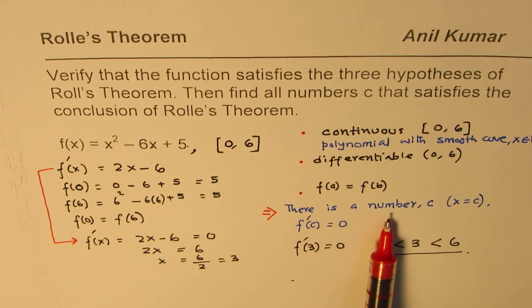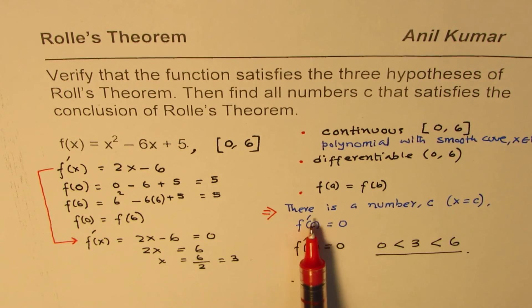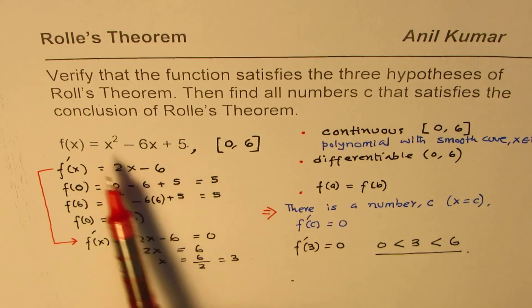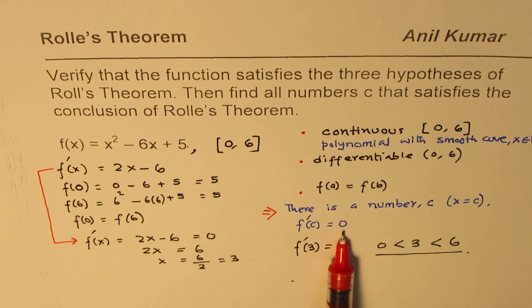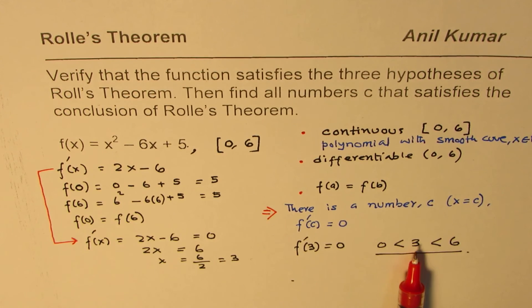Then, there exists a number c, where the derivative of the function will be 0. That's the turning point, and that you can find, as we did, and then verify that this turning point is between 0 to 6.